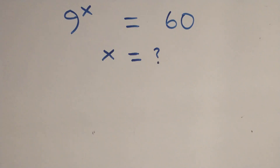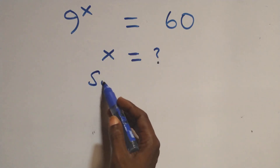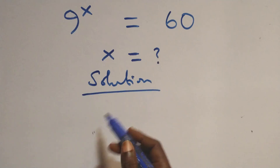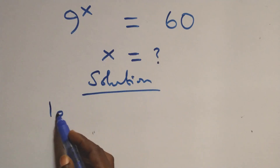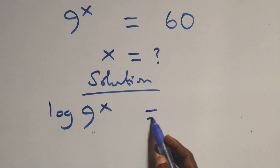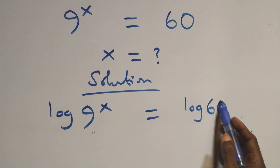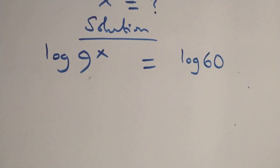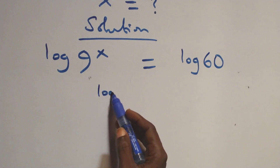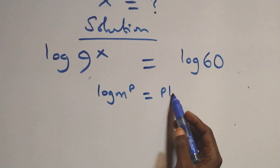Hello, you're welcome. Here we solve this exponential equation. We take the log on both sides: log(9^x) = log(60). From here, we apply the rule that log(m^p) equals p·log(m).